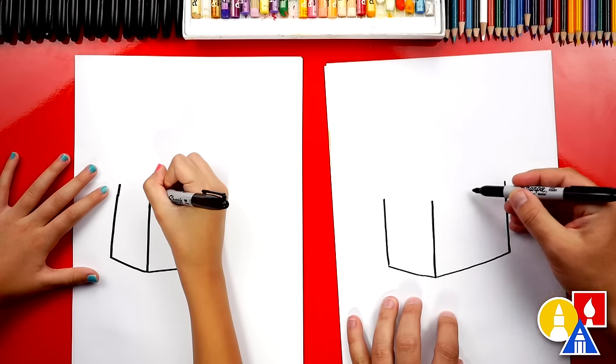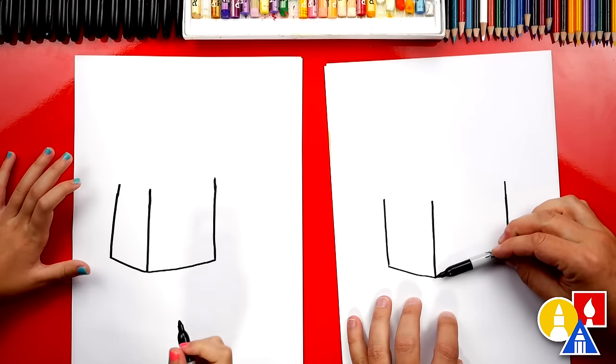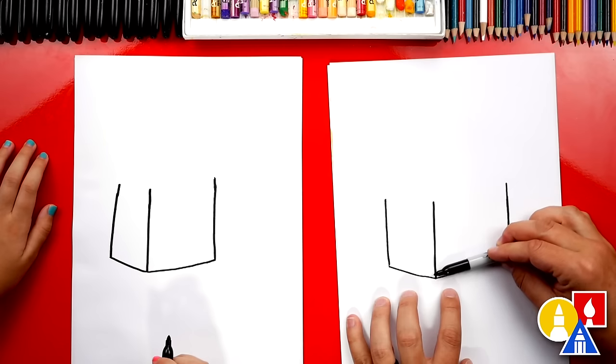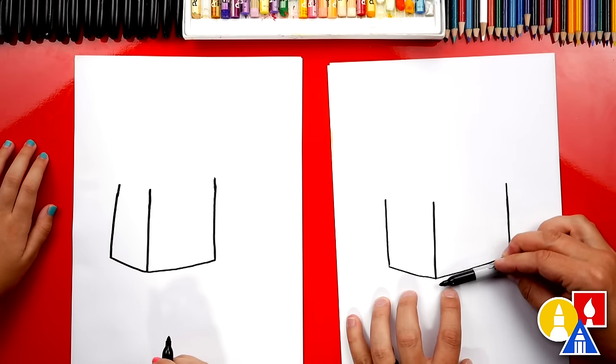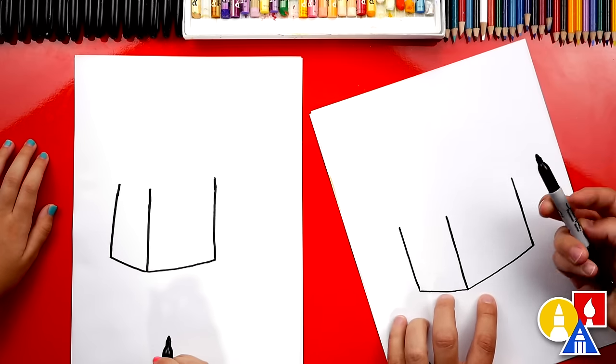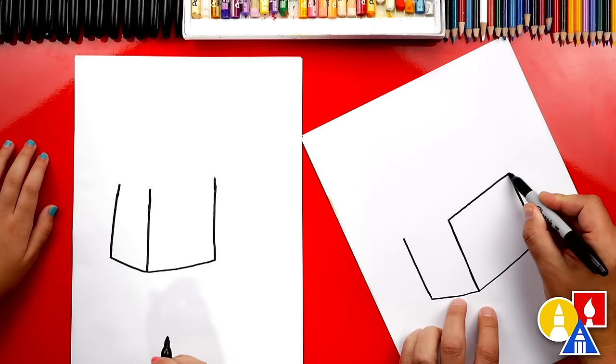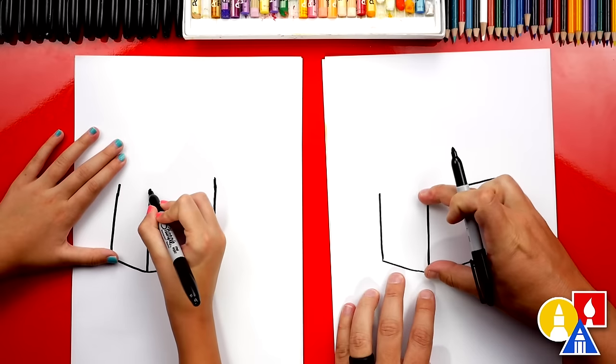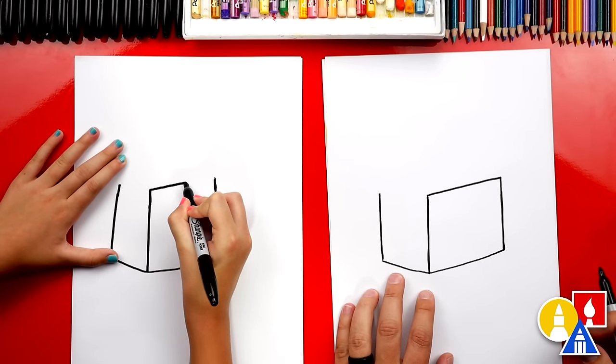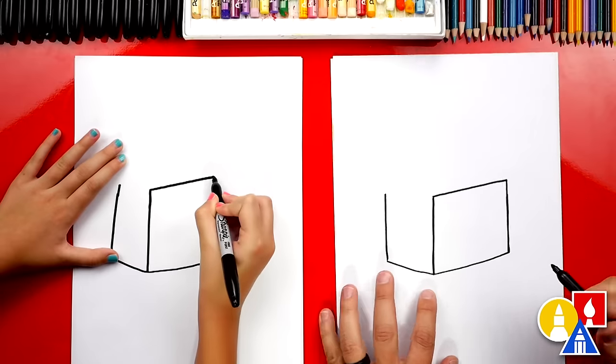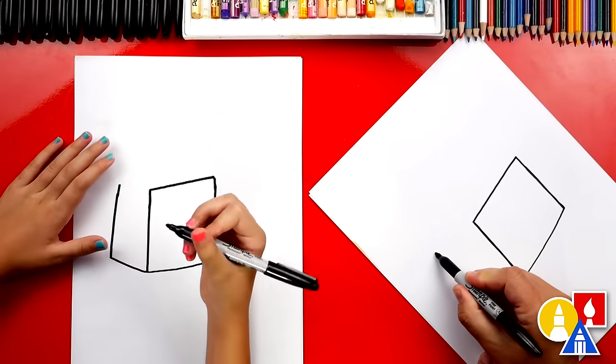Now we're gonna connect all of these lines, but we want to make sure that the angle, this angle down here at the bottom, is the same angle up here. So we're gonna move that line with our eyes and we're gonna draw that same angle. So it should already, if we just connect it, it should work if this is the same length. Then we're gonna do the same thing over here on this side.